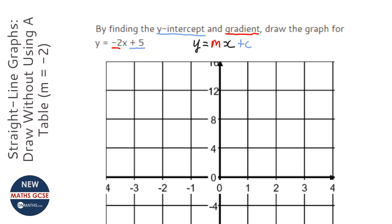So the first thing to plot is the y-intercept, which is 5. So looking at the scale here, that's 6 there, so 5 would be here.